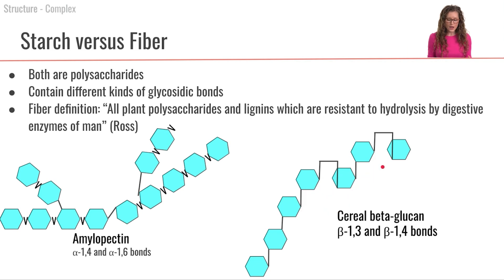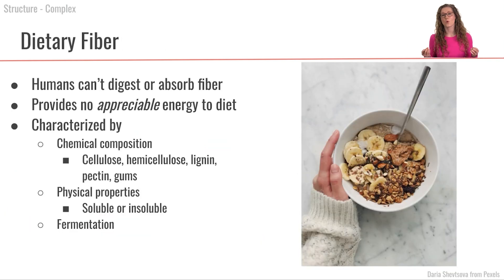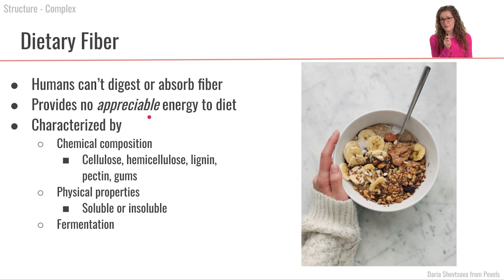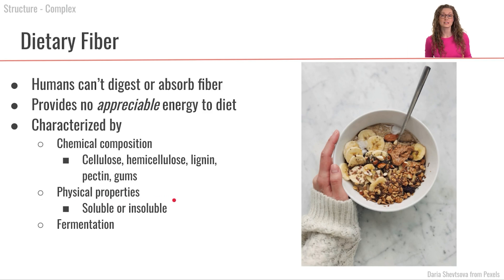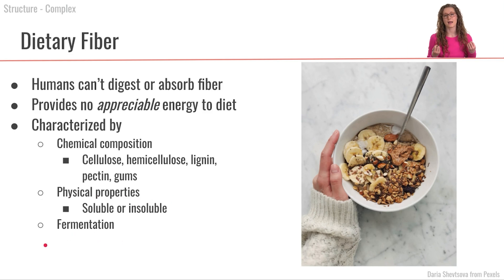Beta-glucan's bond types are what make it a fiber. The definition of fiber encompasses all plant polysaccharides and lignins resistant to hydrolysis by human digestive enzymes. Humans can't digest or absorb fiber, so it provides no appreciable energy directly — though microbes can metabolize some fiber and we can absorb their metabolites for a small, variable amount of energy. Dietary fiber can be characterized by chemical composition (cellulose, hemicellulose, lignin, pectins, gums), physical properties (soluble vs. insoluble), or fermentability by gut microbes.